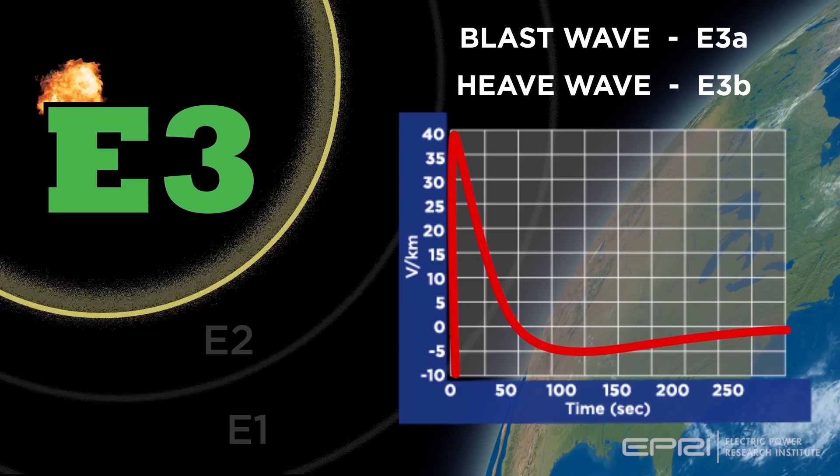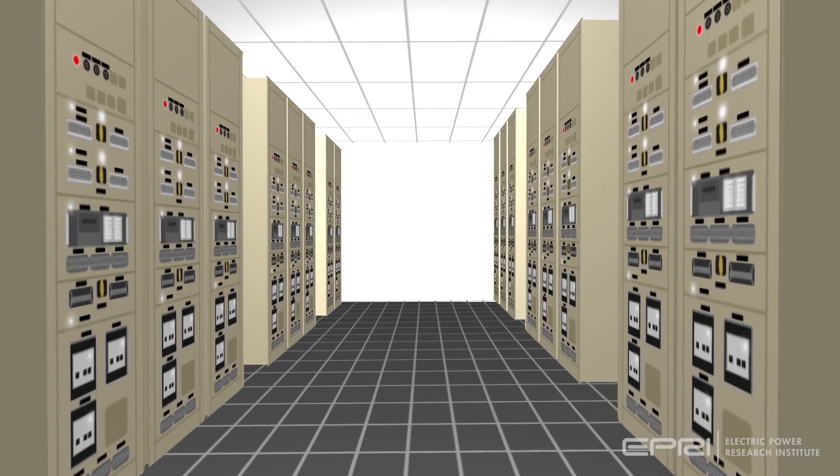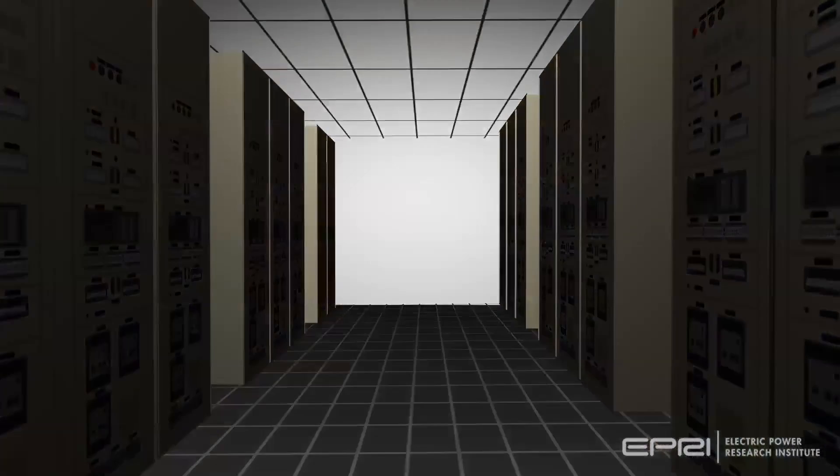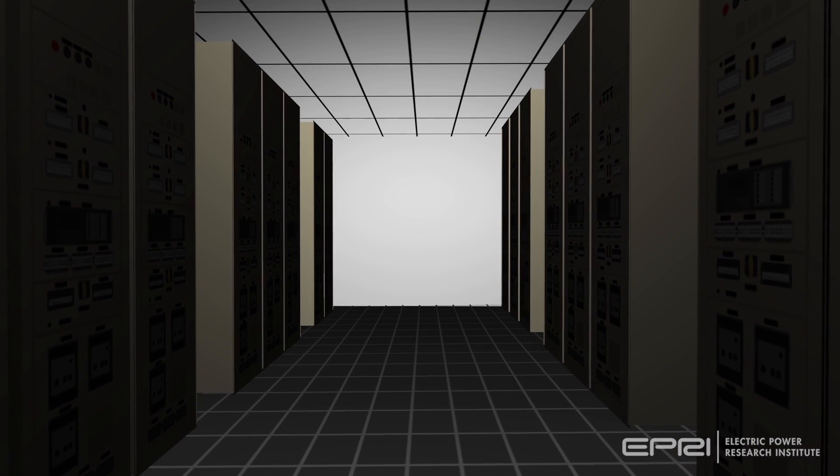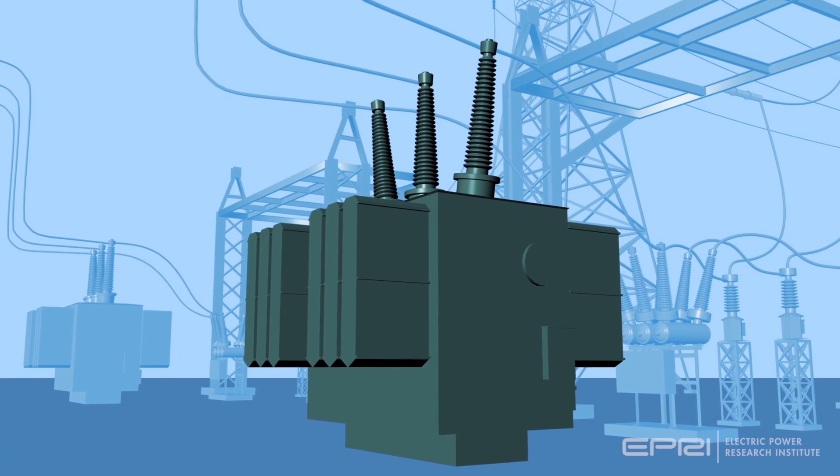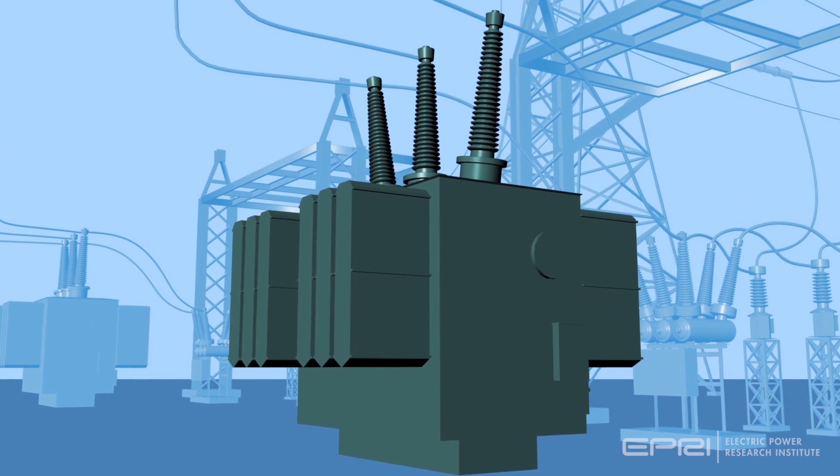E3 has two potential impacts. One, voltage collapse due to increased reactive power consumption and misoperation of protection systems due to harmonics, and two, additional hotspot heating in transformers.